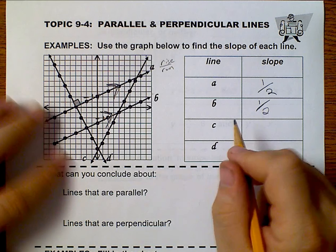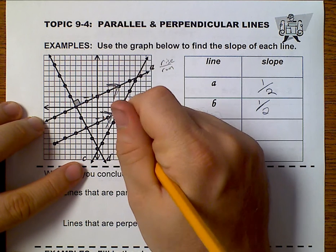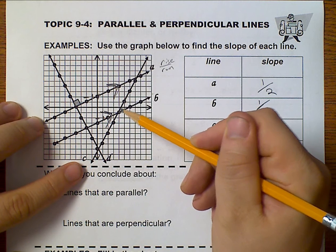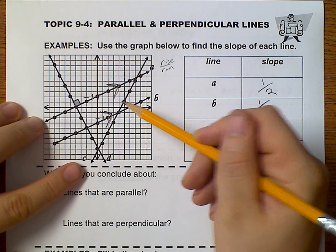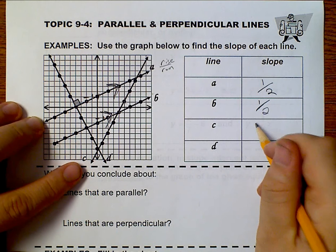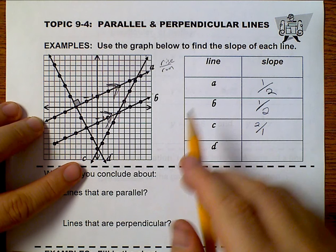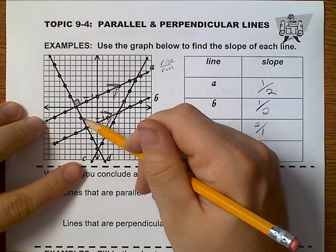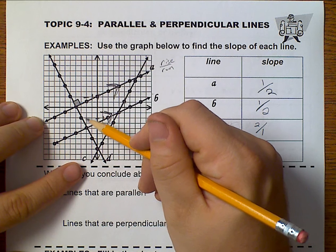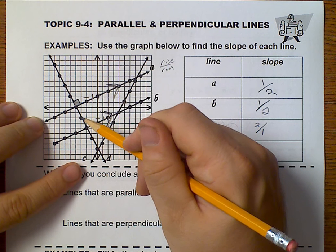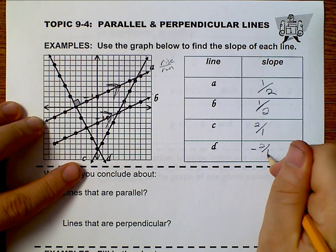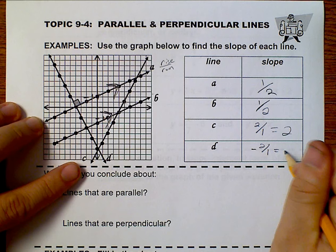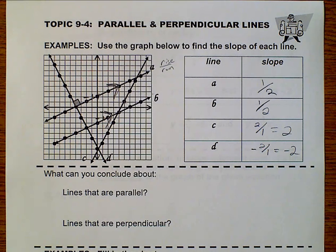For line C, that would be this one. I'm going to go ahead and use these two points. So I rise 1, 2, and I run 1. And for D, that would be this one. I'm going to use these two points. I rise 2 and run 1, but I'm going backwards. And so that means it needs to be negative. Well, 1 half, that's as simple as it gets. 2 over 1 is just 2. And negative 2 over 1 is negative 2. And so those are our slopes.